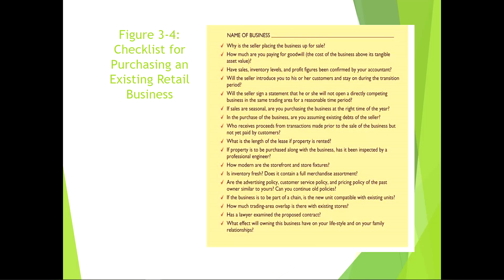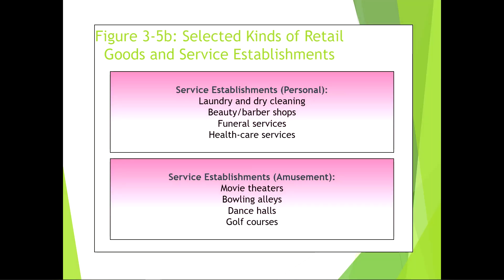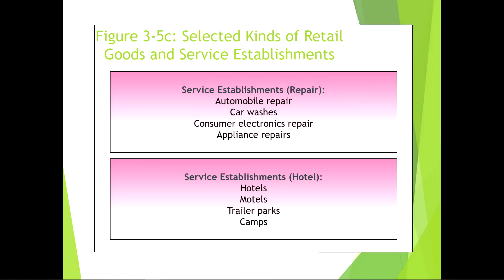Selected kinds of retail goods and service establishments include durable goods and non-durable goods. Service establishments include personal services, amusement services, repair services such as cars or appliances, and hotels. Services vary enormously, being intangible versus products, which are tangible and durable.